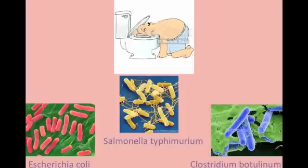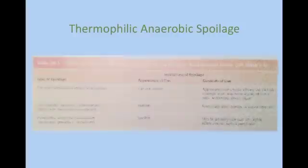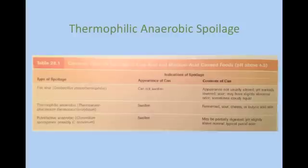Clostridium botulinum is a bacteria that can find its way into spoiled canned foods. If ingested, this bacteria can cause botulism, which is an extremely harmful disease that can cause weakness, double vision, and muscle paralysis. A type of spoilage is thermophilic anaerobic spoilage, which occurs if canned foods are incubated at high temperatures — there is a chance for the thermophilic bacteria that survive to germinate and cause more trouble. This is a common cause of spoilage in low-acid canned foods at the commercial level. This graph depicts common types of spoilage in acid-containing canned foods.